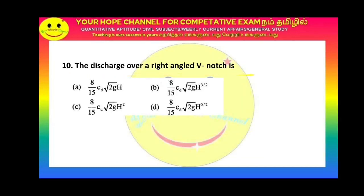Next question: Discharge over a right-angled V-notch (triangular notch). The answer is option D: Q = (8/15) · CD · √(2G) · H^(5/2). For a V-notch, Q is proportional to H^(5/2), whereas for a rectangular notch, Q is proportional to H^(3/2).